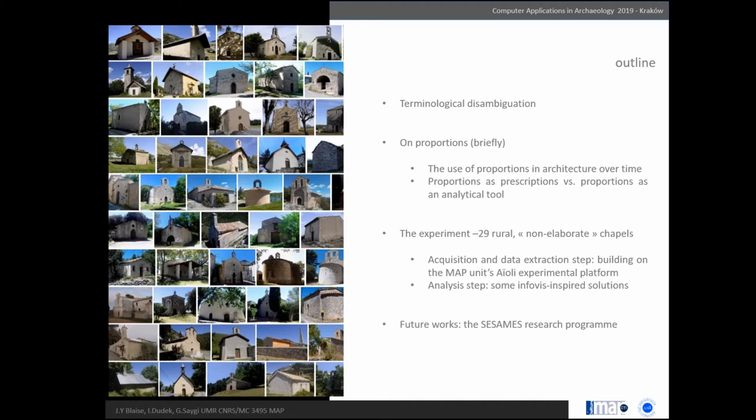This is the outline of my talk. I'll start with some terminological disambiguation on the word proportion. I'll briefly mention ideas about proportions in architecture, then detail the experiment from the acquisition step and analysis step, before concluding on future works.